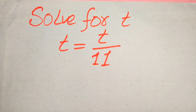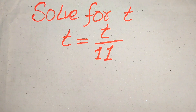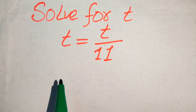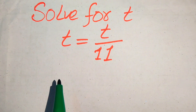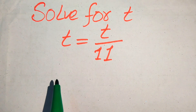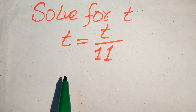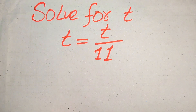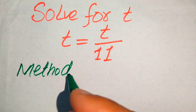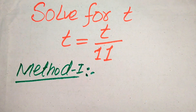Hello everyone. How to solve this problem for the values of t, if we have t equals t divided by 11. We solve this for all values of t, which means we first need to find all the roots of this equation, and at the end we will verify which roots are solutions and which are extraneous roots. We will solve this problem using two methods.